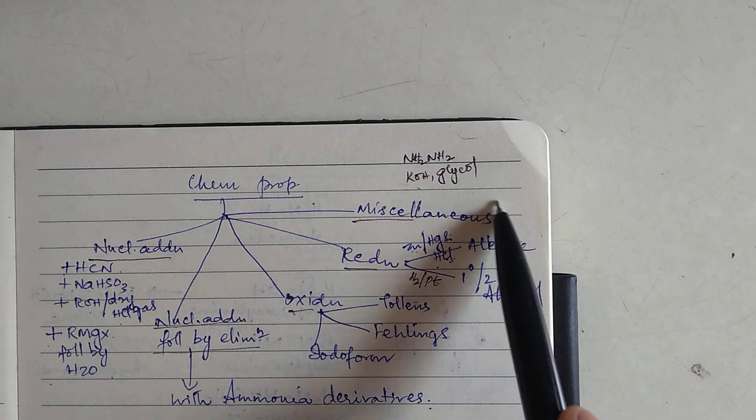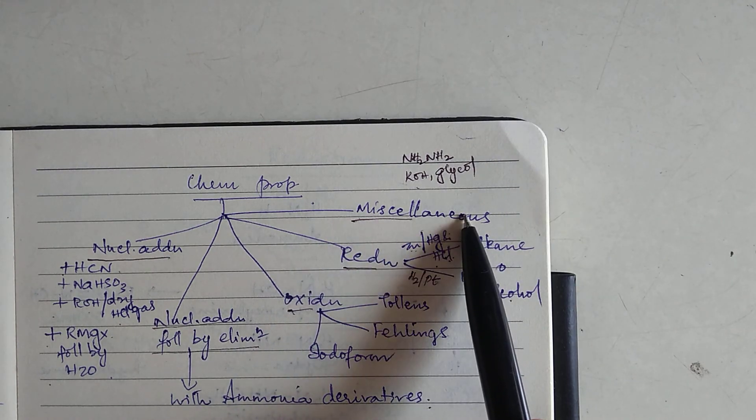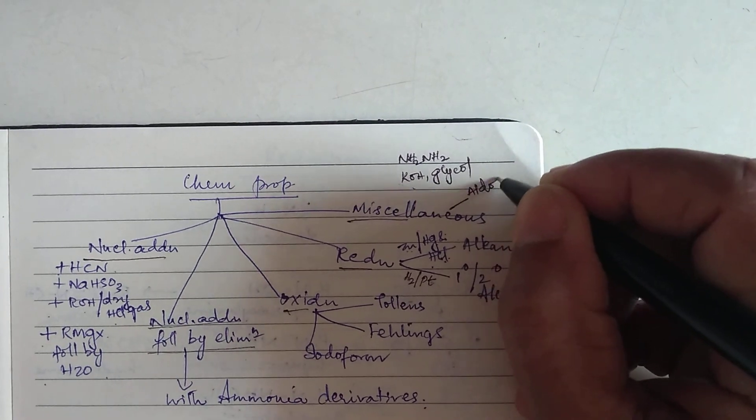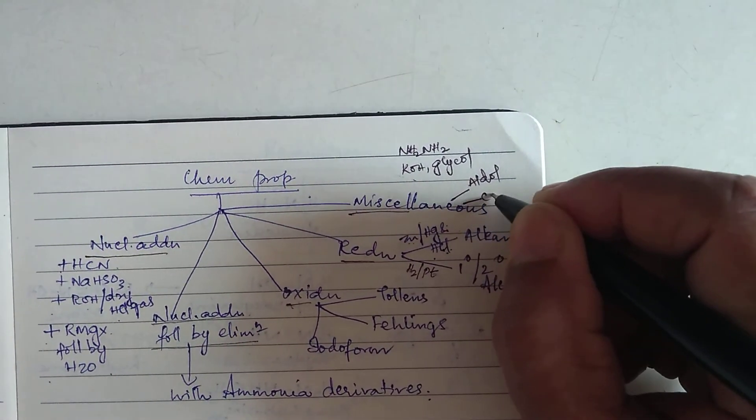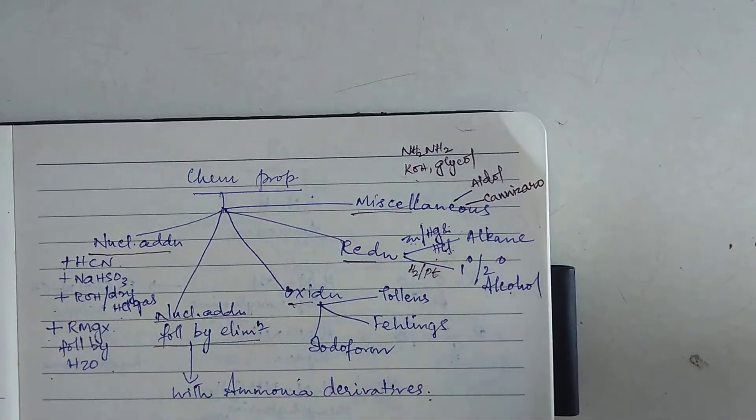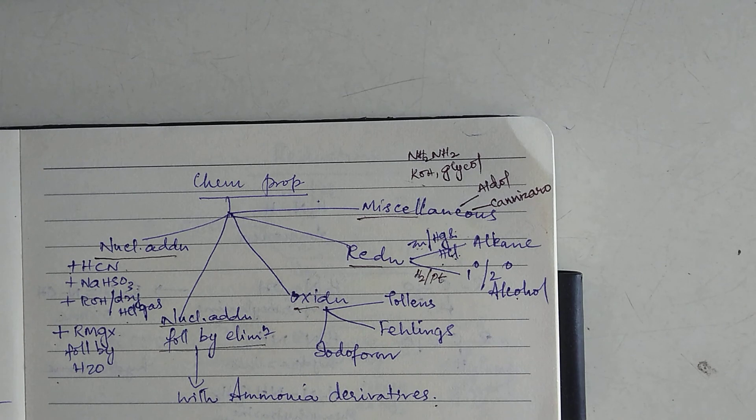Then apart from this, we are going to see miscellaneous reactions under which we are going to study two reactions. One is called as aldol condensation and the other one is called as canizero reaction. So, this is the gist of what chemical properties we are going to study about.